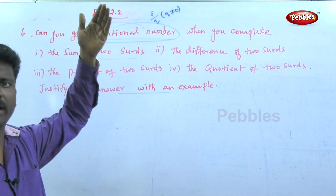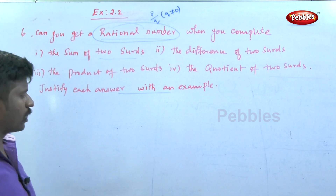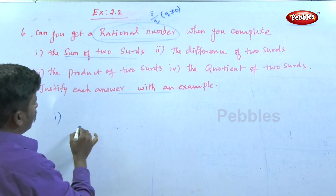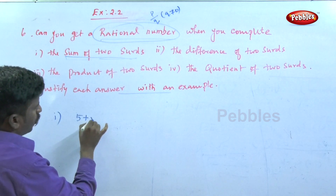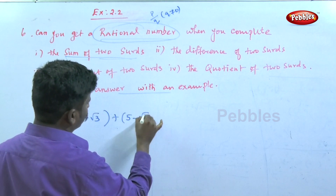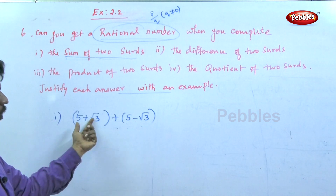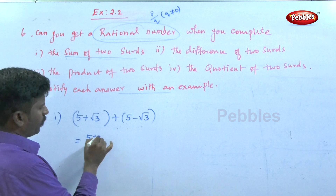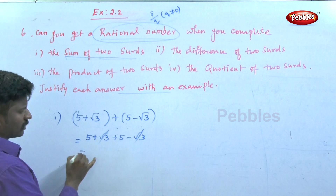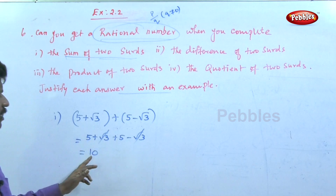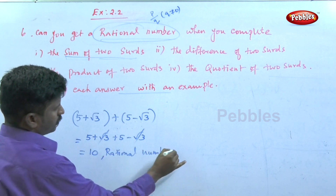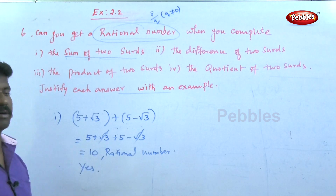For the first point — sum of two surds: take (5 + √3) and (5 − √3). Adding them: 5 + √3 + 5 − √3. The √3 and −√3 cancel, giving 5 + 5 = 10. So 10 is a rational number. Yes, we can get a rational number from the sum of two surds.